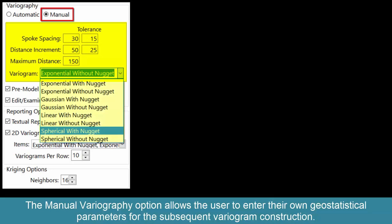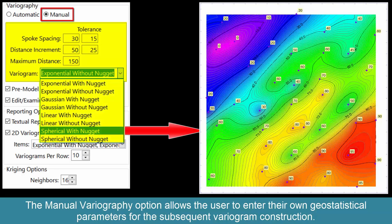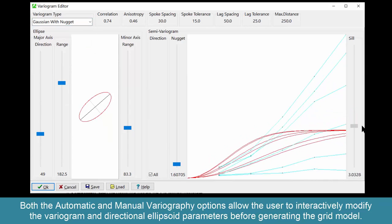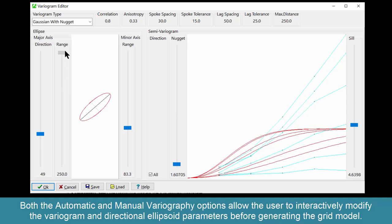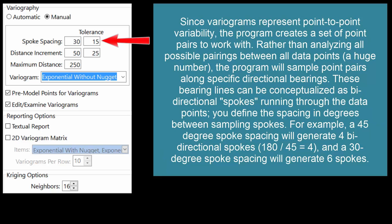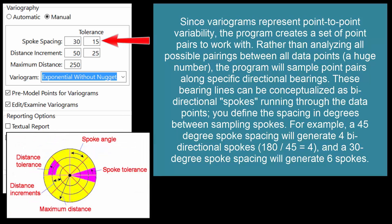The manual variography option allows the user to enter their own geostatistical parameters for the subsequent variogram construction. Both automatic and manual variography options allow the user to interactively modify the variogram and directional ellipsoid parameters before generating the grid model. The geostatistical input parameters within the manual variography input menu are defined as follows. Since variograms represent point-to-point variability, the program creates a set of point pairs to work with. Rather than analyzing all possible pairings between all data points, the program samples point pairs along specific directional bearings.